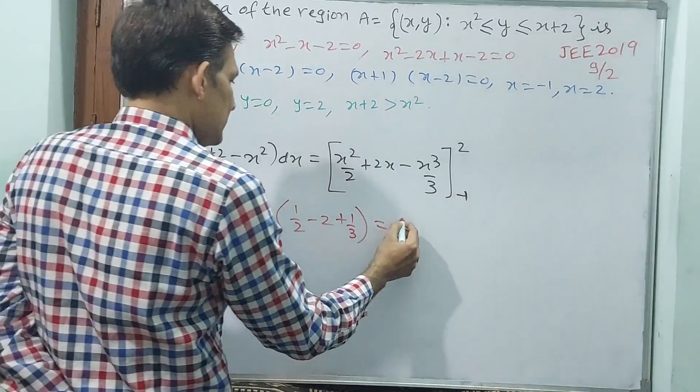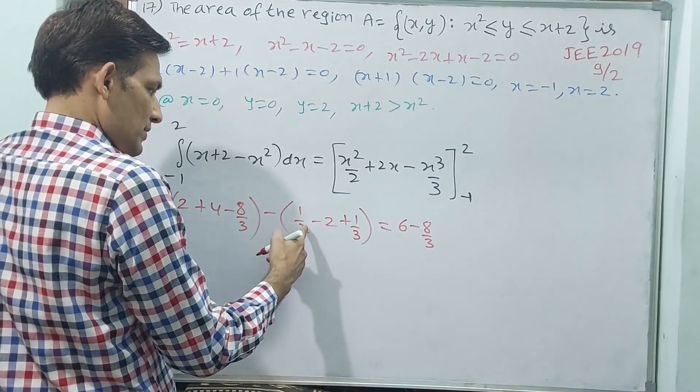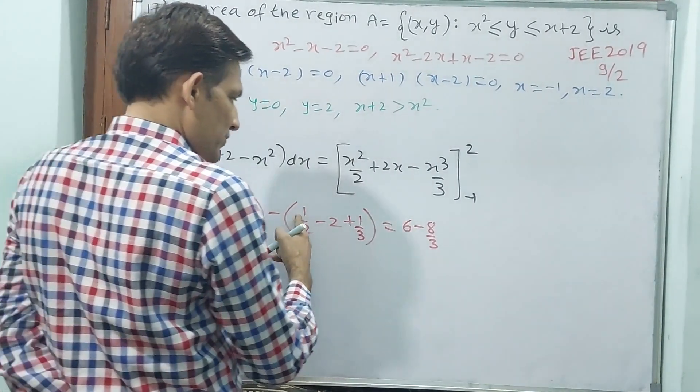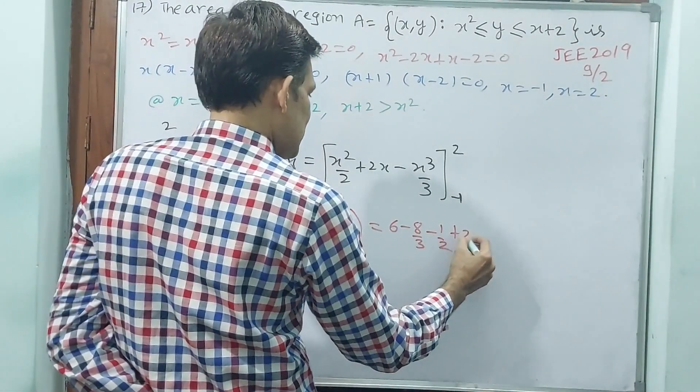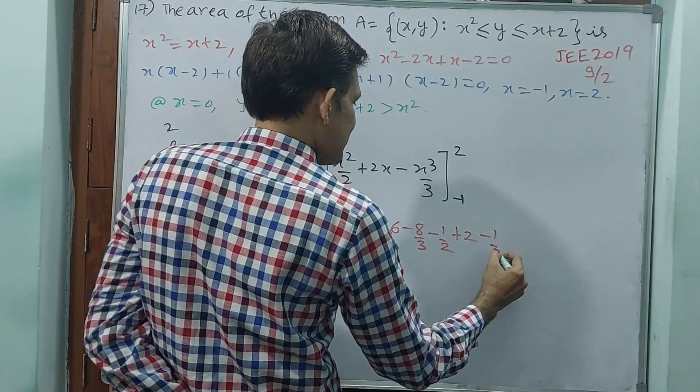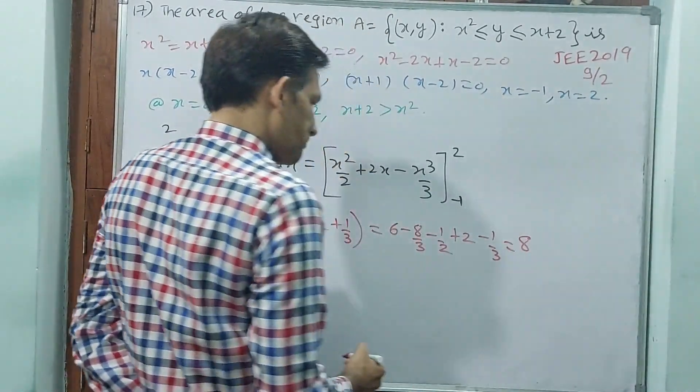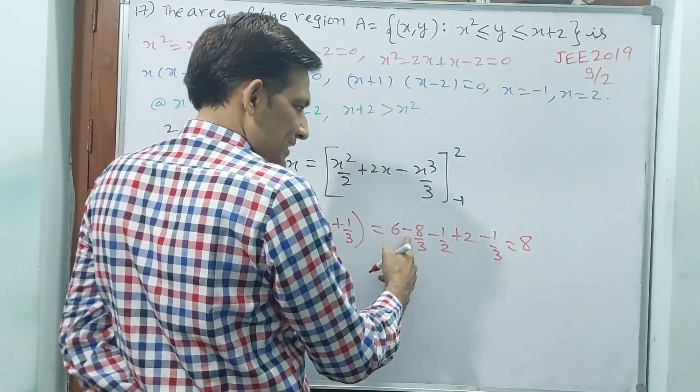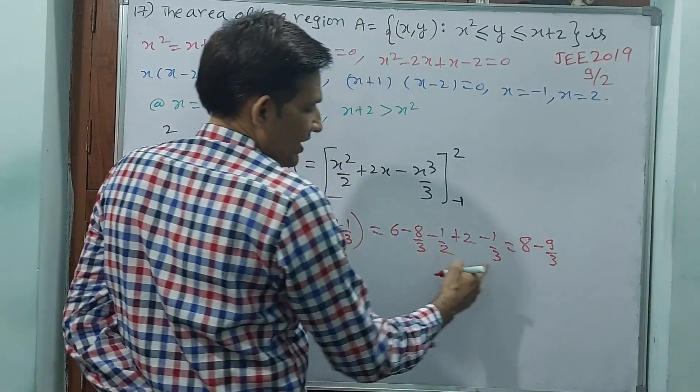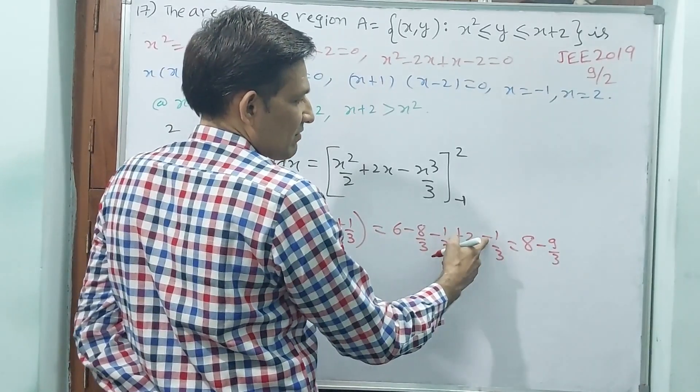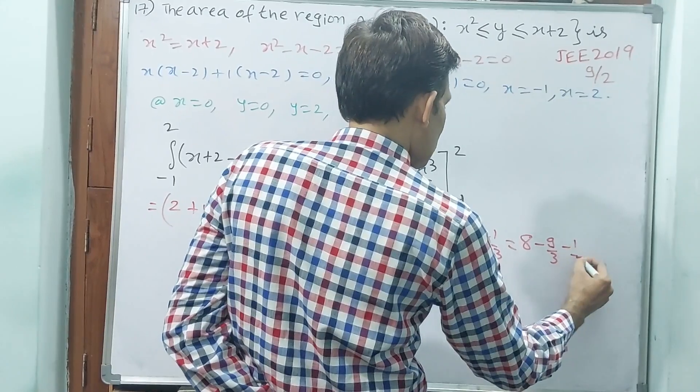That is equal to, see, 2 plus 4, that's 6, minus 8 by 3. See, minus 1 by 2 plus 2 minus 1 by 3. 6 plus 2, 8. See, minus 8 minus 1 minus 1 by 2.